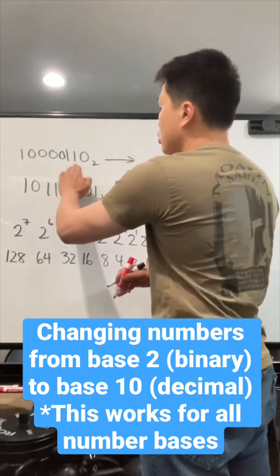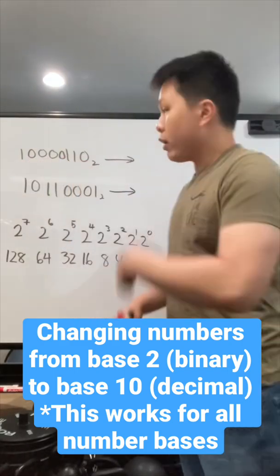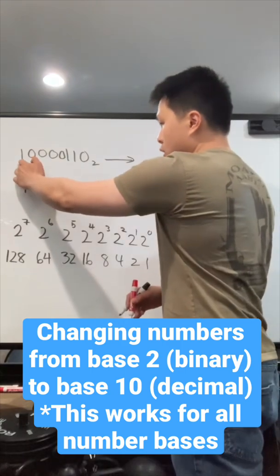After that, we see what numbers are in front. Luckily for us, this is binary, so it's only going to be 1 or 0. If it's not, then you have to multiply. In this case, let's look at this.